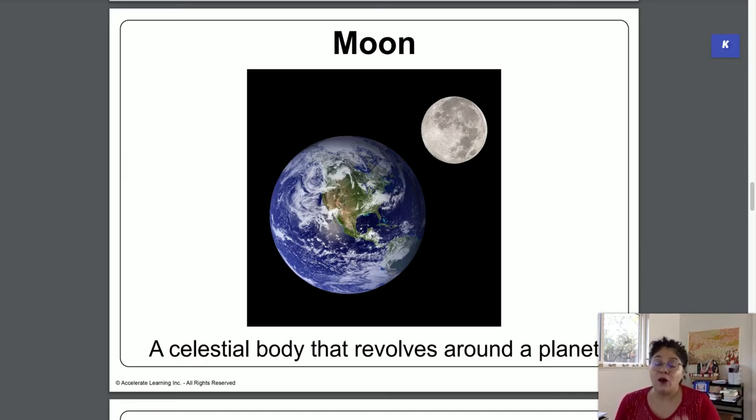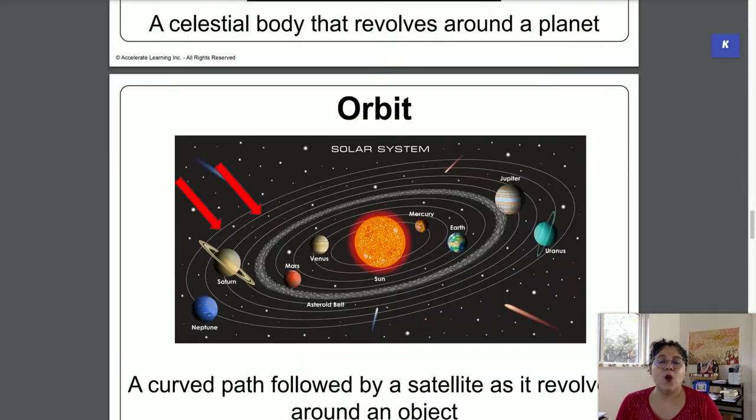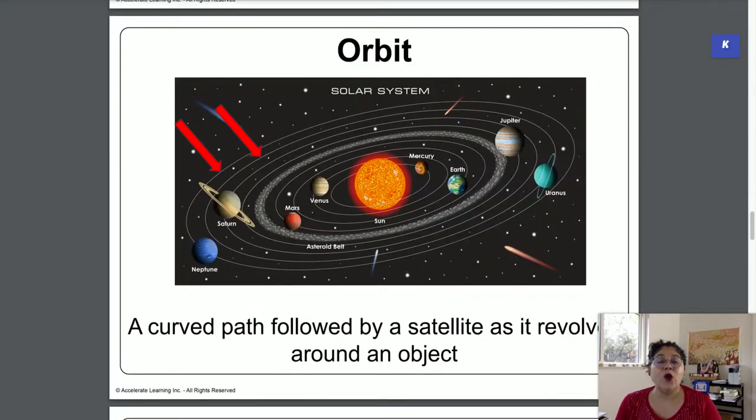Next word is orbit. Now an orbit is a curved path of something that goes around something else. For example, the moon orbits the planet Earth. As a planet, we orbit the Sun, and all the different planets in our solar system orbit our Sun.